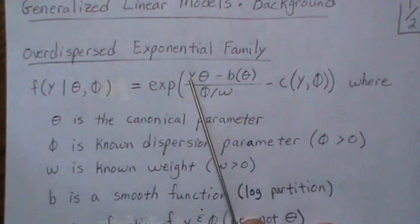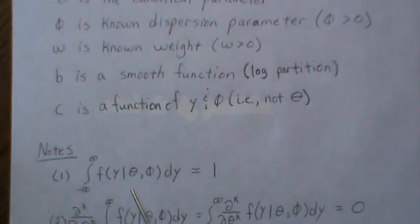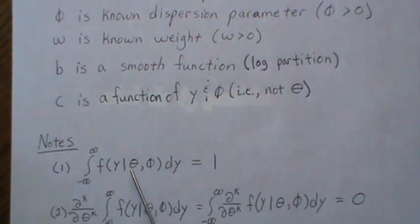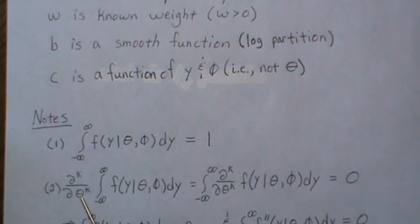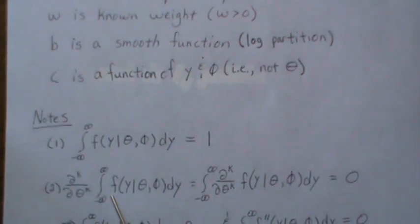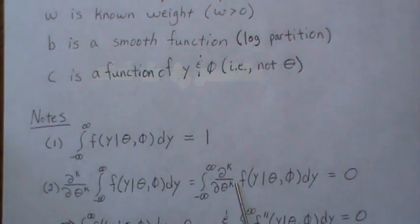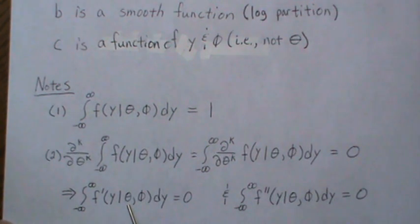In the GLM setting y must just be the data. So if we take our density and integrate over all possible values of y it integrates to one. If we then take the derivative of both sides with respect to theta, the right side is zero since it's a constant, and we can pass the derivative through the integral sign to obtain a key identity that holds for any order k.